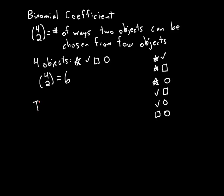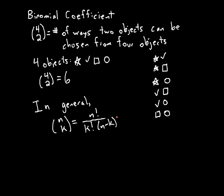To compute their values, you usually don't list out all the possibilities, because that takes a long time and it can be hard to know when you're done. Instead, we have a general formula. n choose k equals n factorial over k factorial times n minus k factorial. Remember that factorial means you multiply a number by all the smaller integers until you get to one and stop. So for example, five factorial is five times four times three times two times one, which is 120.